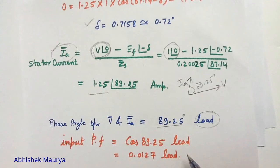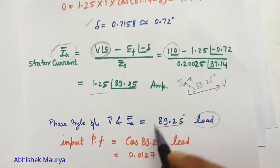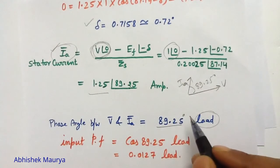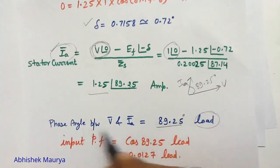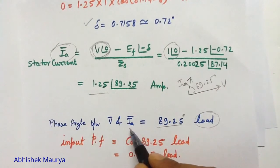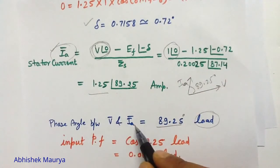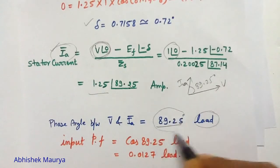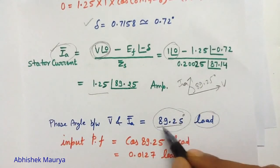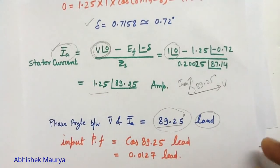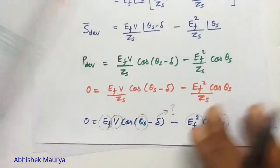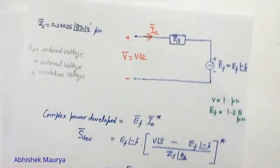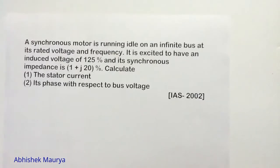You can find out the input power factor. But in the second part of the question, the examiner is asking the phase angle between the terminal voltage and the stator current. So your answer will be 89.25 degrees leading. In this way, we have solved this problem.